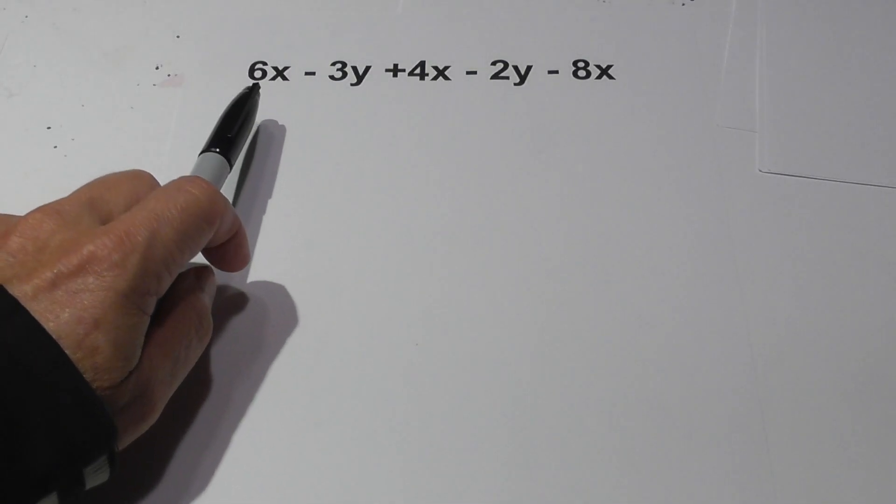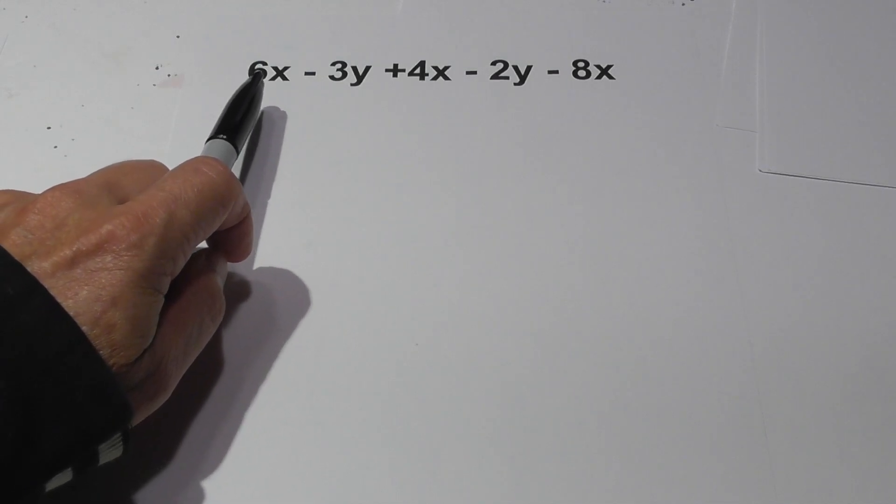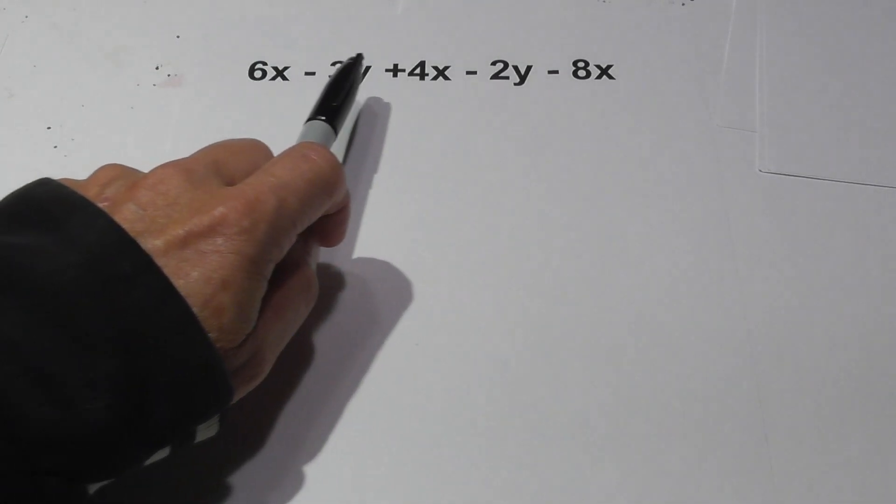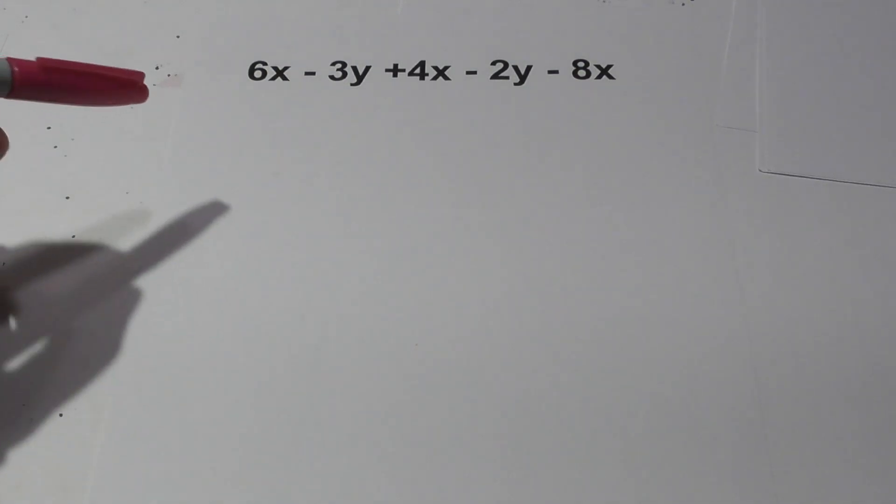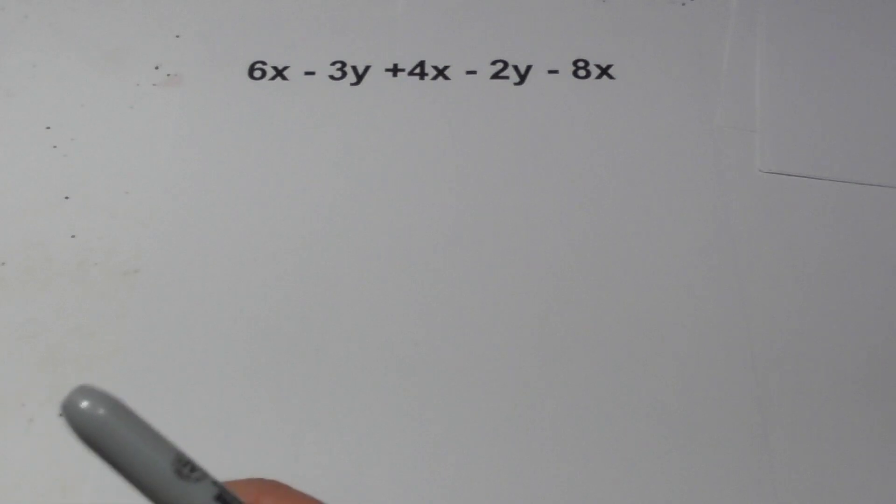In this problem the first thing we need to do is combine like terms. We only have subtraction and addition, so we don't need to worry about order of operations. The next problem will have order of operations we'll need to take into account. You always work in alphabetical order. Since x comes before y we'll worry about these first.